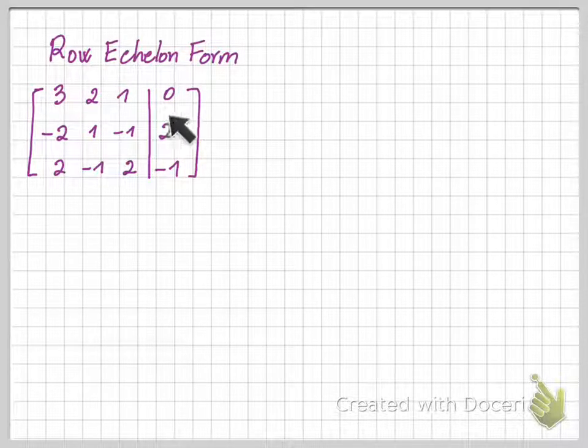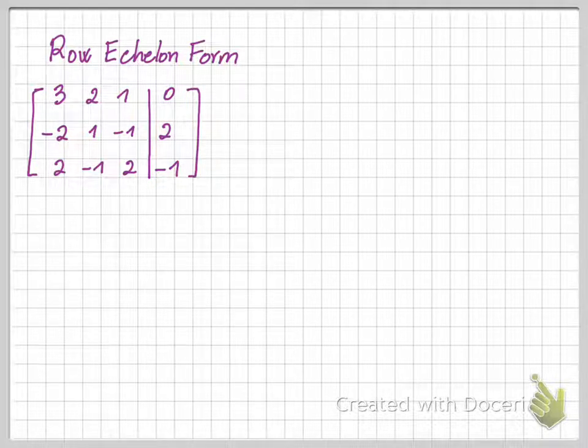First we want to look at the first row. The first row doesn't have any leading zeros, so then we're going to assign it as a pivot row.